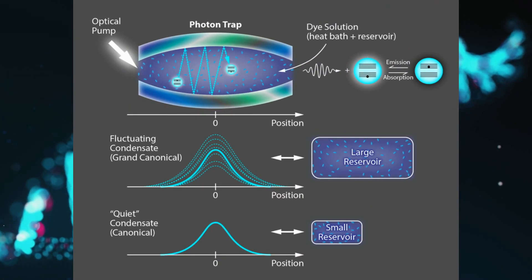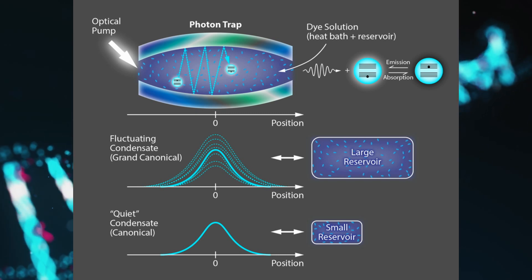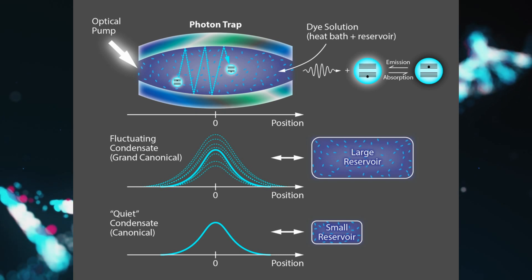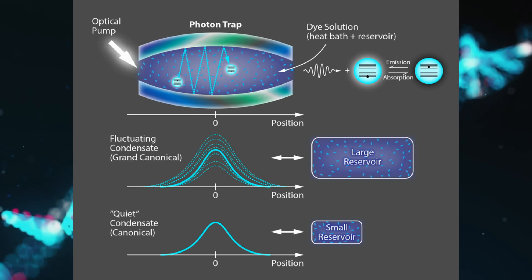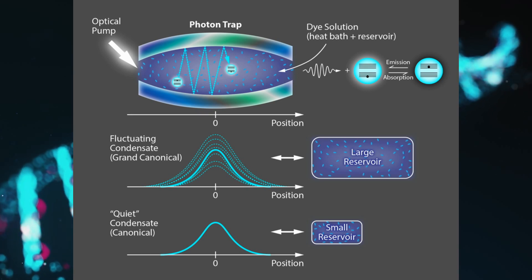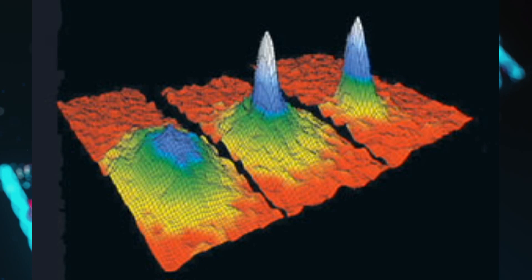The Bose-Einstein condensate, BEC, is a state of matter that occurs at incredibly low temperatures, just a few billionths of a degree above absolute zero. At this temperature, a large number of bosons, a type of particle, come together and occupy the lowest quantum state, forming a single entity that behaves as one quantum object instead of a collection of individual particles. This fascinating occurrence was first predicted by Satyendra Nath Bose and Albert Einstein.